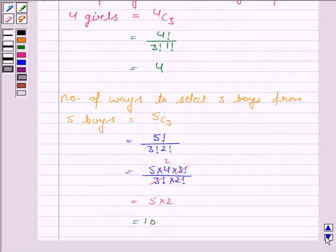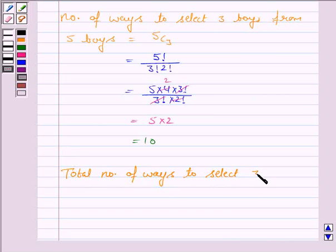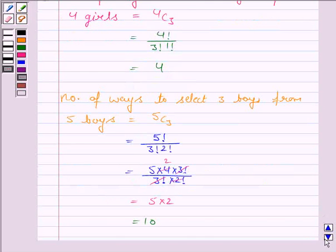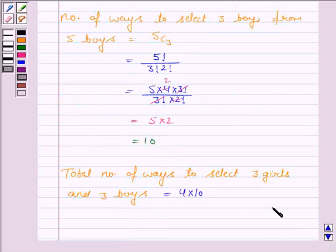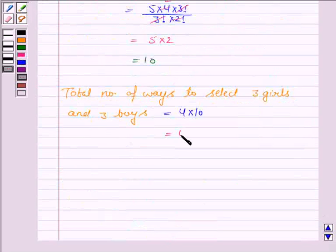Now, we have to form a team of 3 girls and 3 boys. So, the total number of ways to select 3 girls and 3 boys is equal to 4 into 10, that is number of ways to select 3 girls into the number of ways to select 3 boys. This is why fundamental principle of counting we discussed in the key idea, and it is equal to 40.